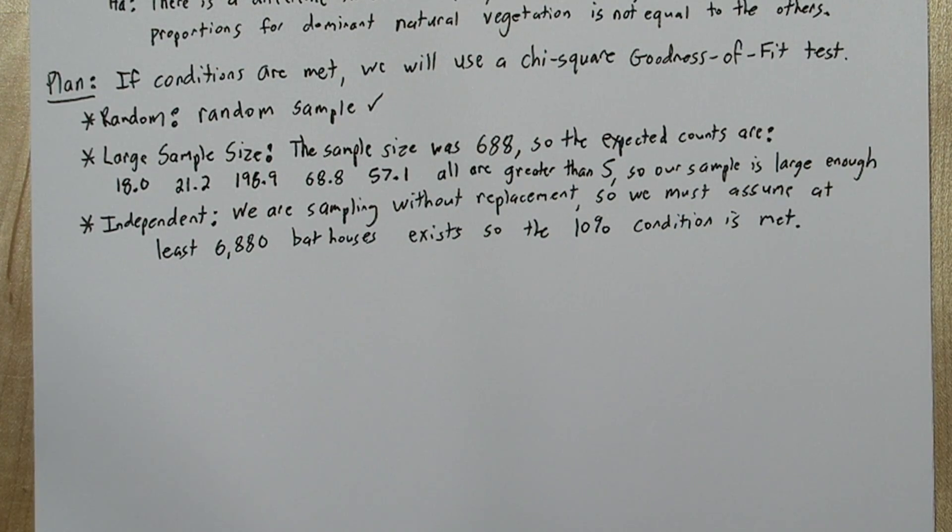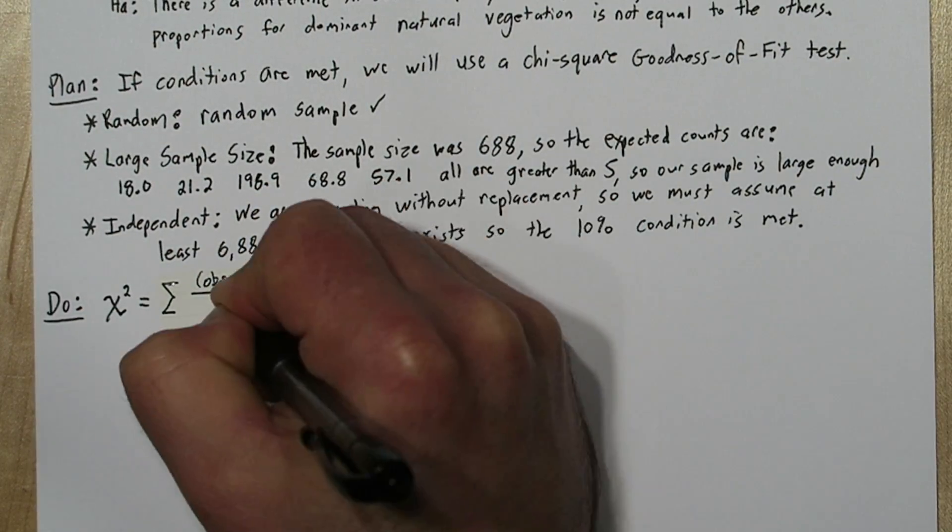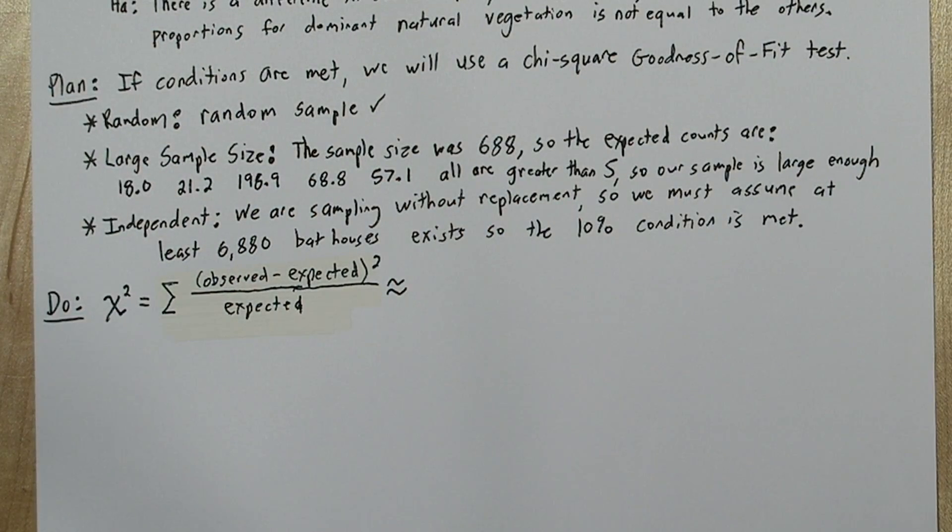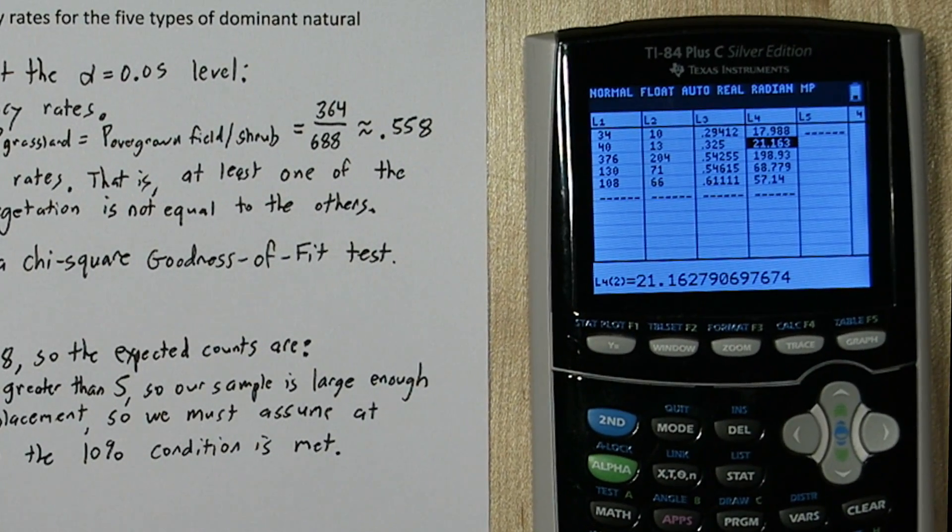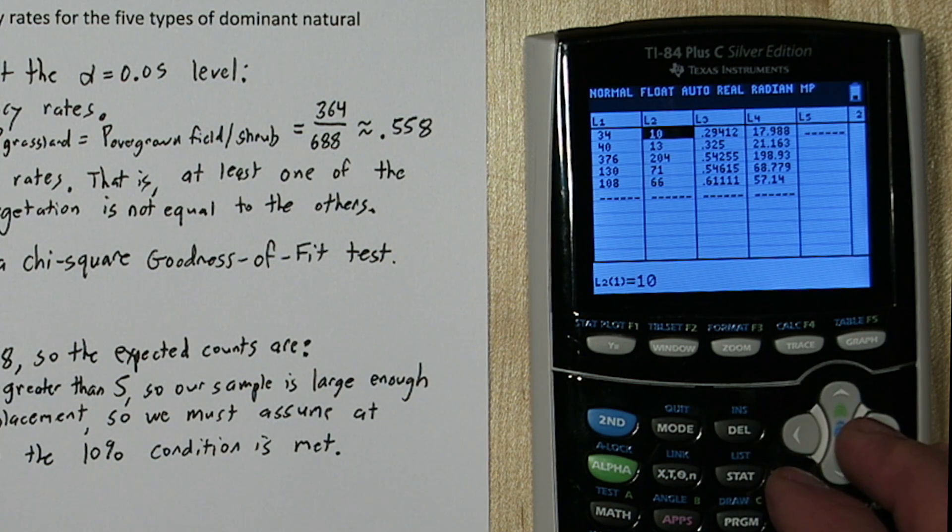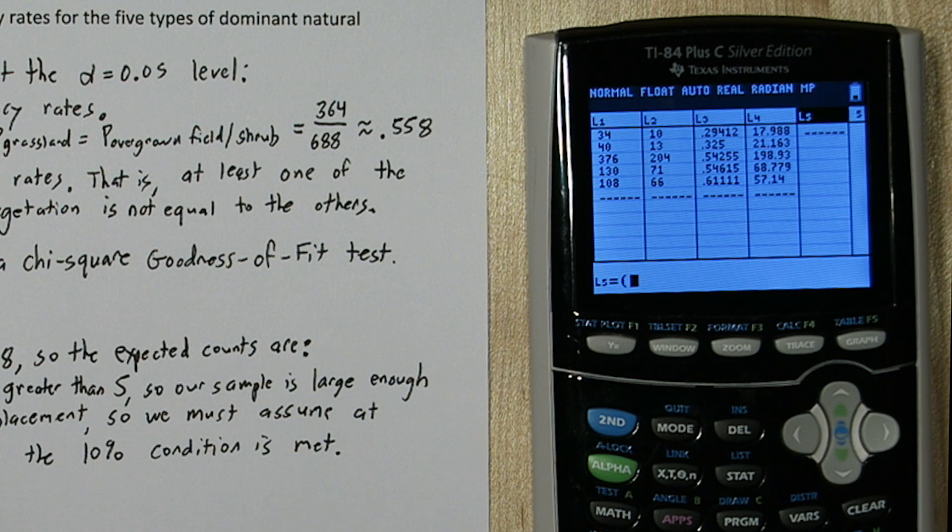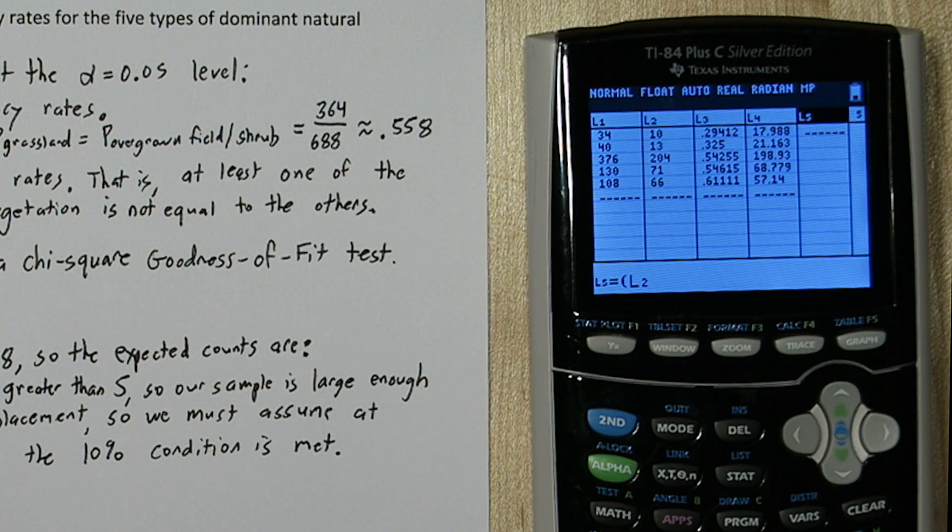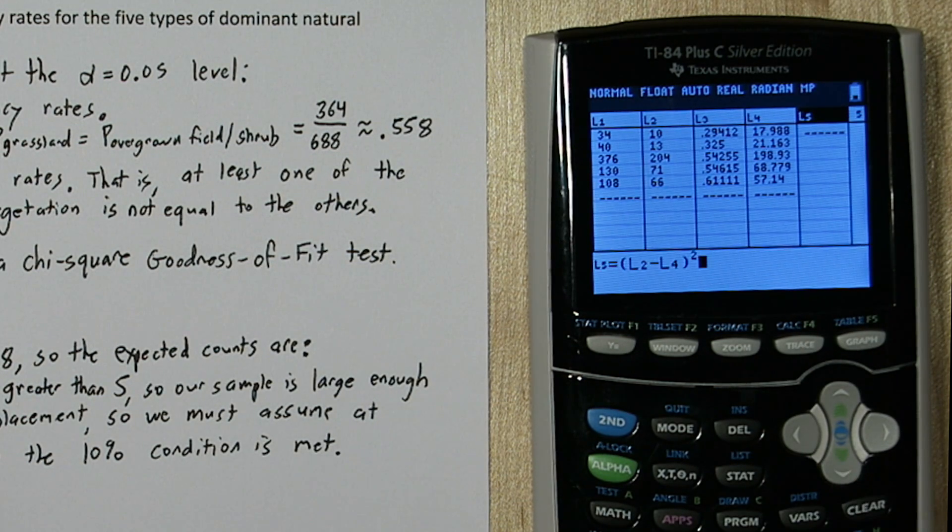To calculate our test statistic, chi-square, we need to take the sum of the observed minus expected squared divided by expected. Now we already have both the observed and expected stored in our calculator. The observed is list two, and what we expected was in list four. So to use this formula, we're going to press up to highlight list five, and we're going to do open parentheses, list two, our observed, minus list four, our expected. We're going to square that quantity and divide it by list four, our expected.